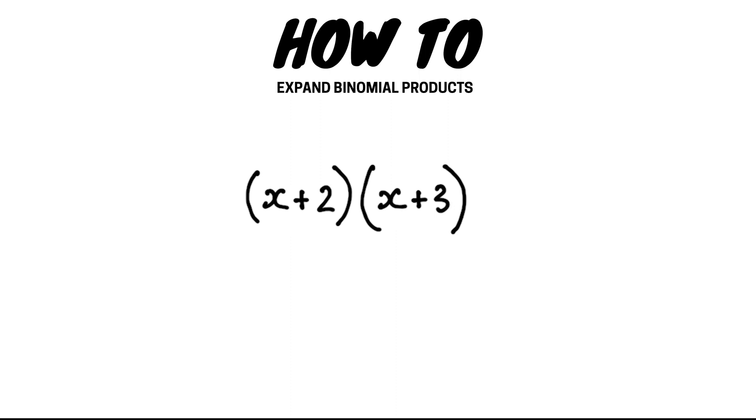To expand binomial products we must multiply all the terms in the first bracket with all the terms in the second bracket. A method that helps us to do this is the FOIL method, which stands for First Outer Inner Last.